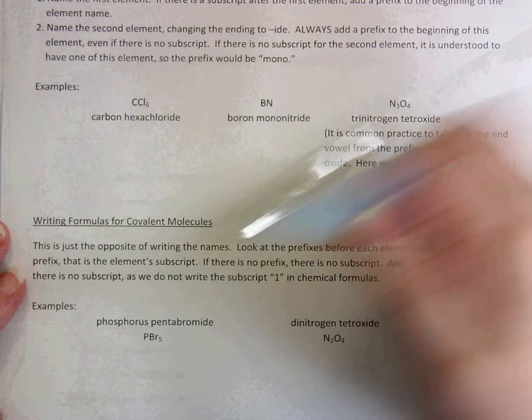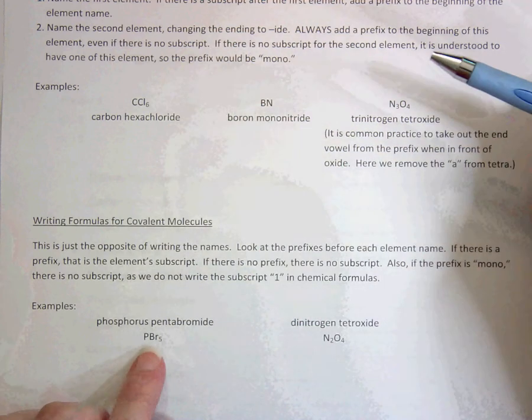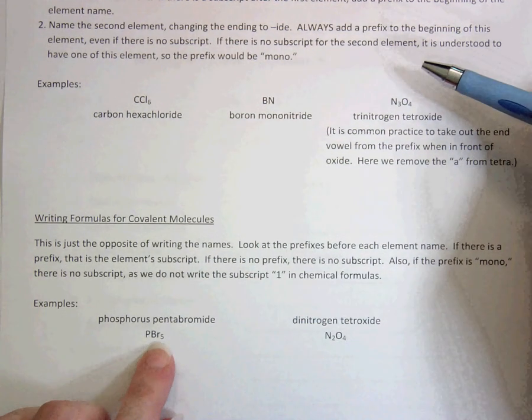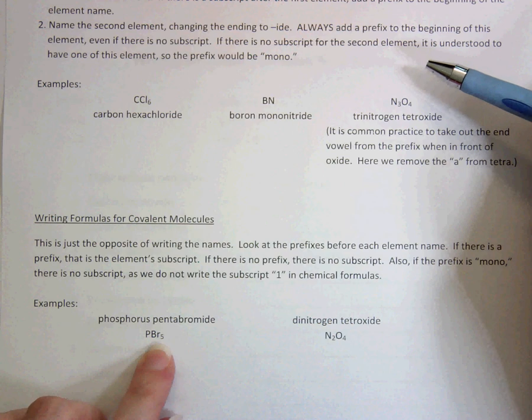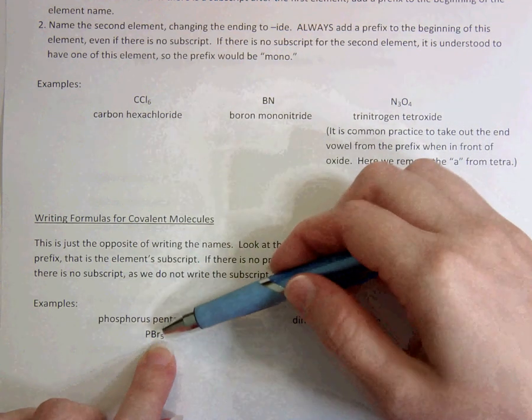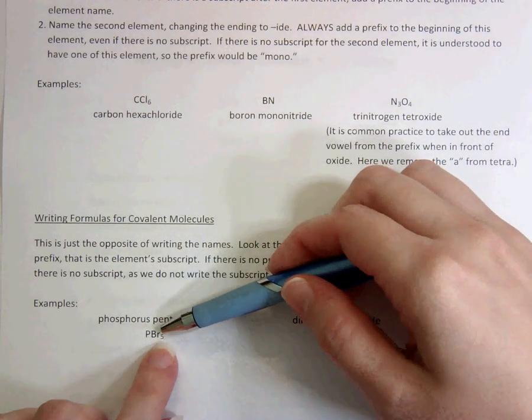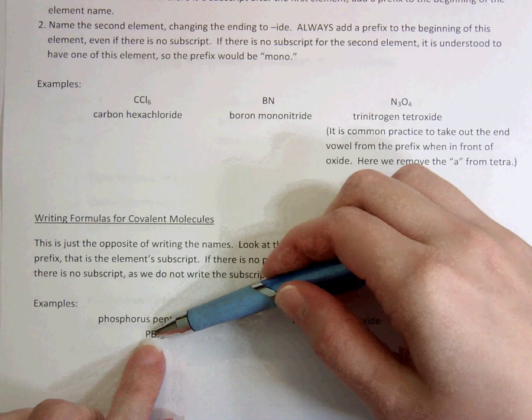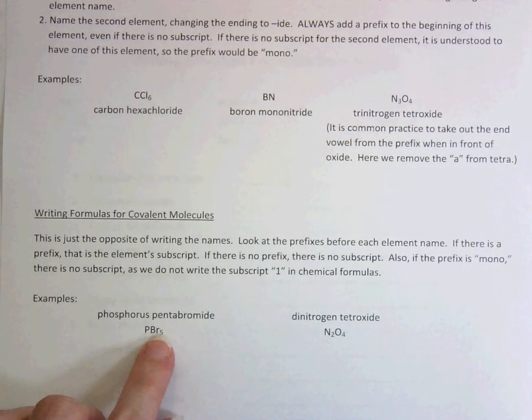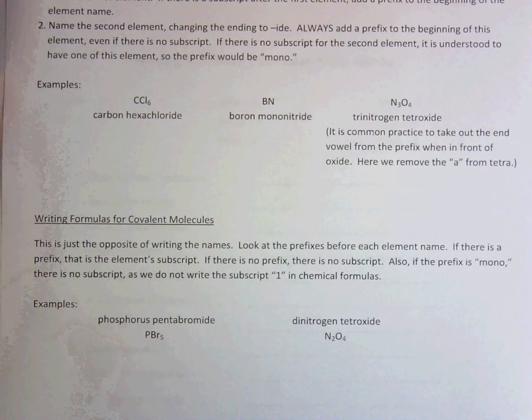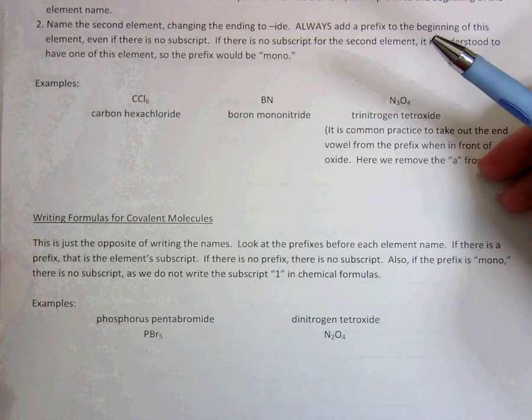Be very careful to make your subscripts subscripts. A subscript, like a submarine goes below the water, a subscript goes below the writing. So these numbers that you're writing for subscript should go down below your symbol. It should not be up on the same line as the symbol. So make sure it goes down a little bit lower.